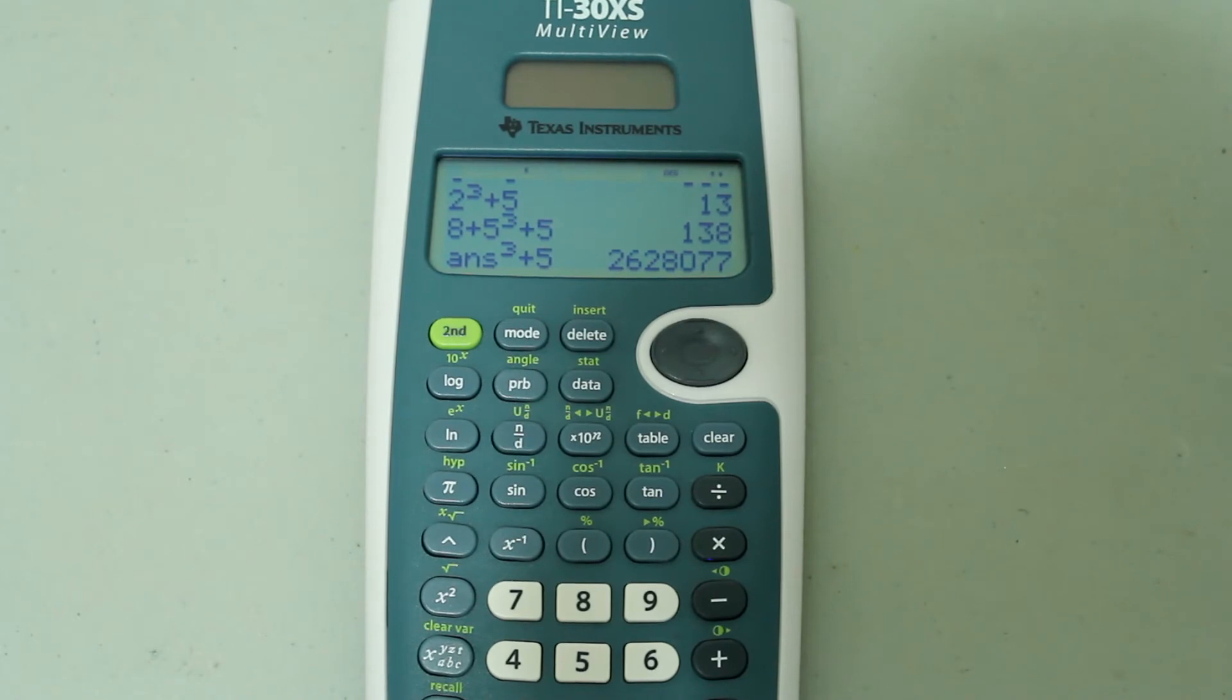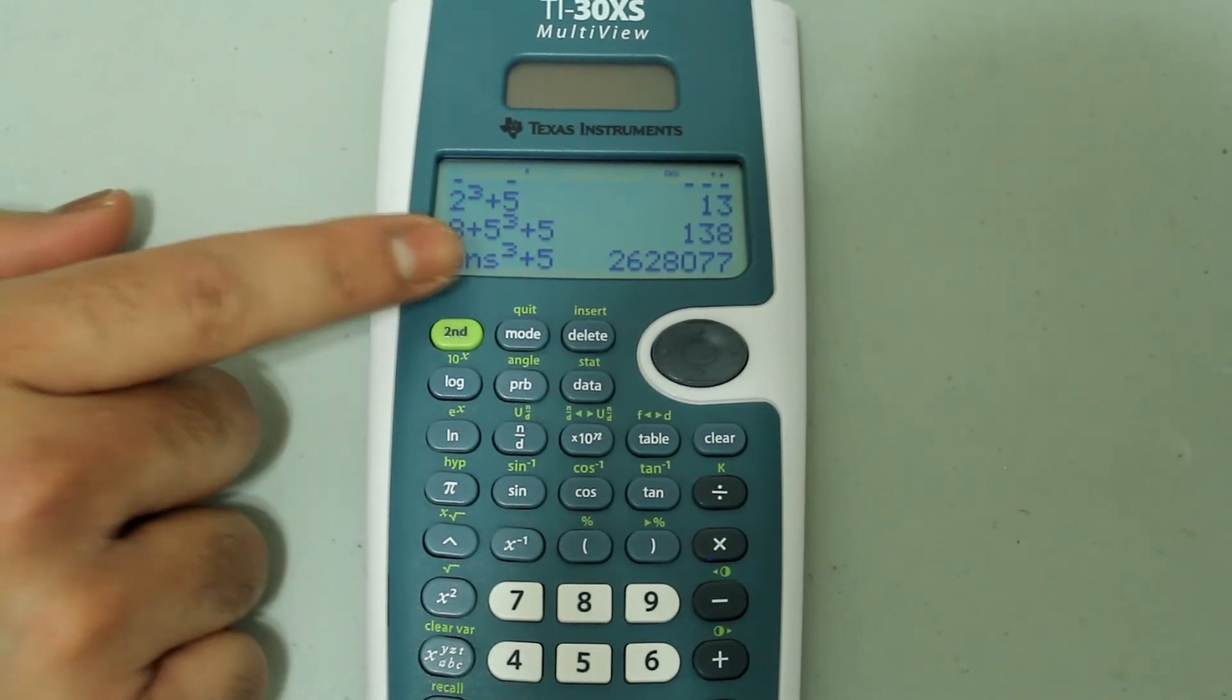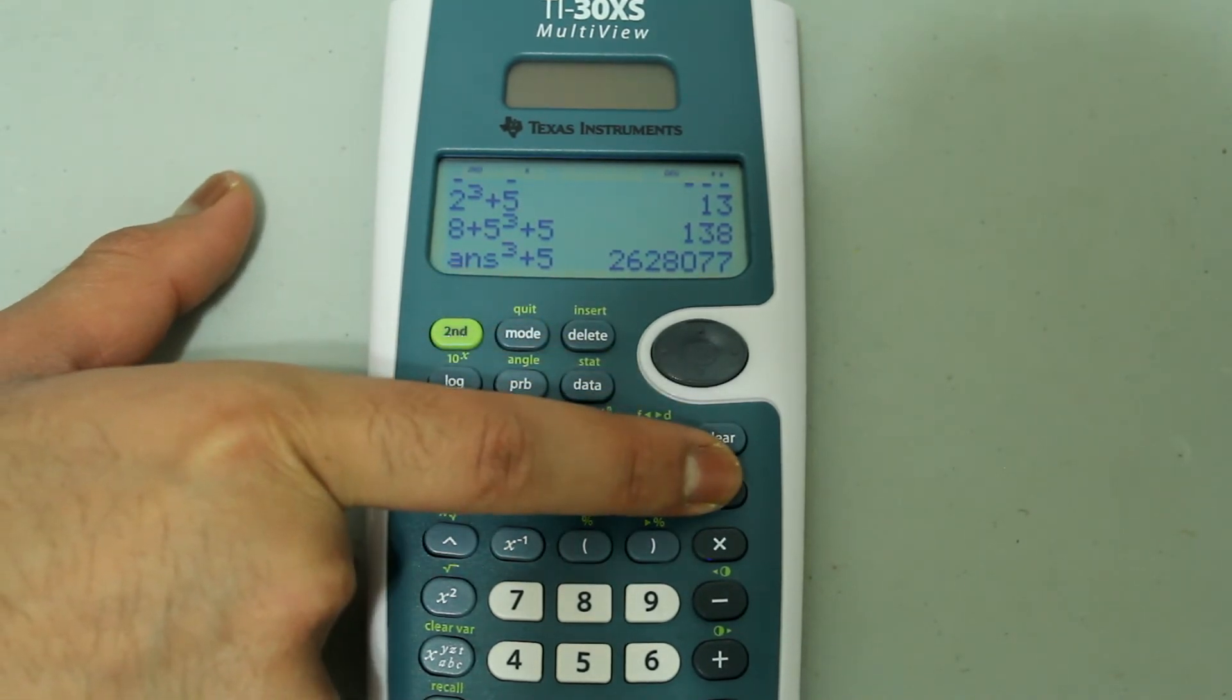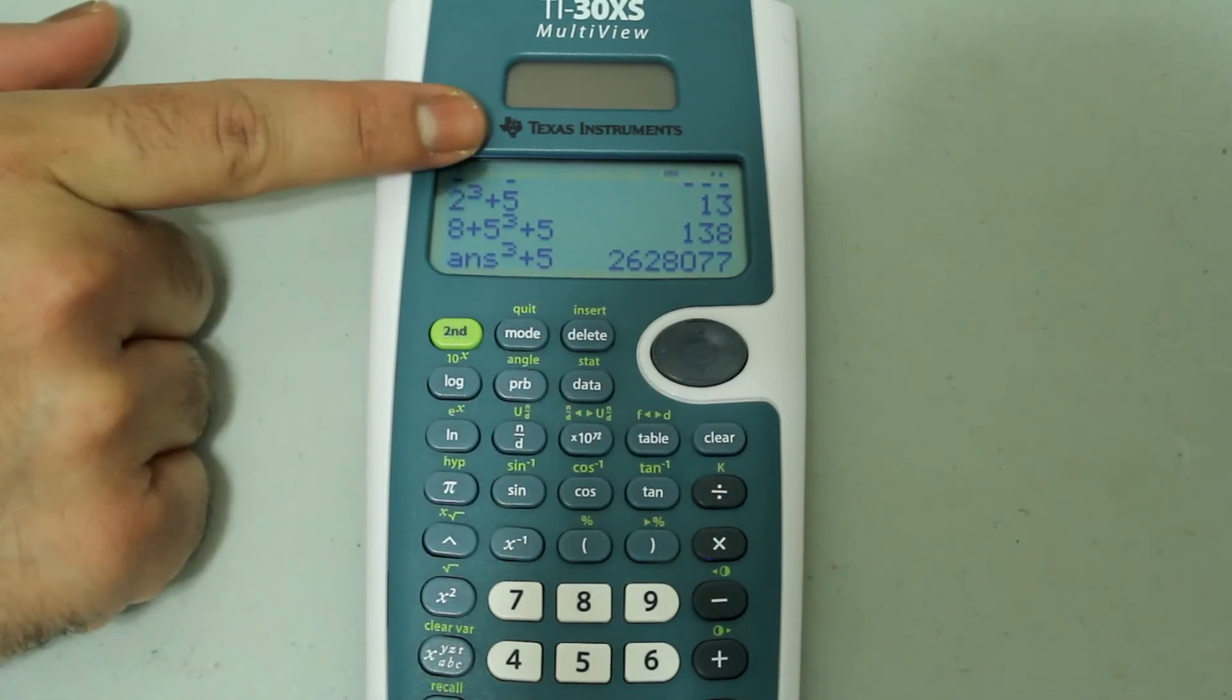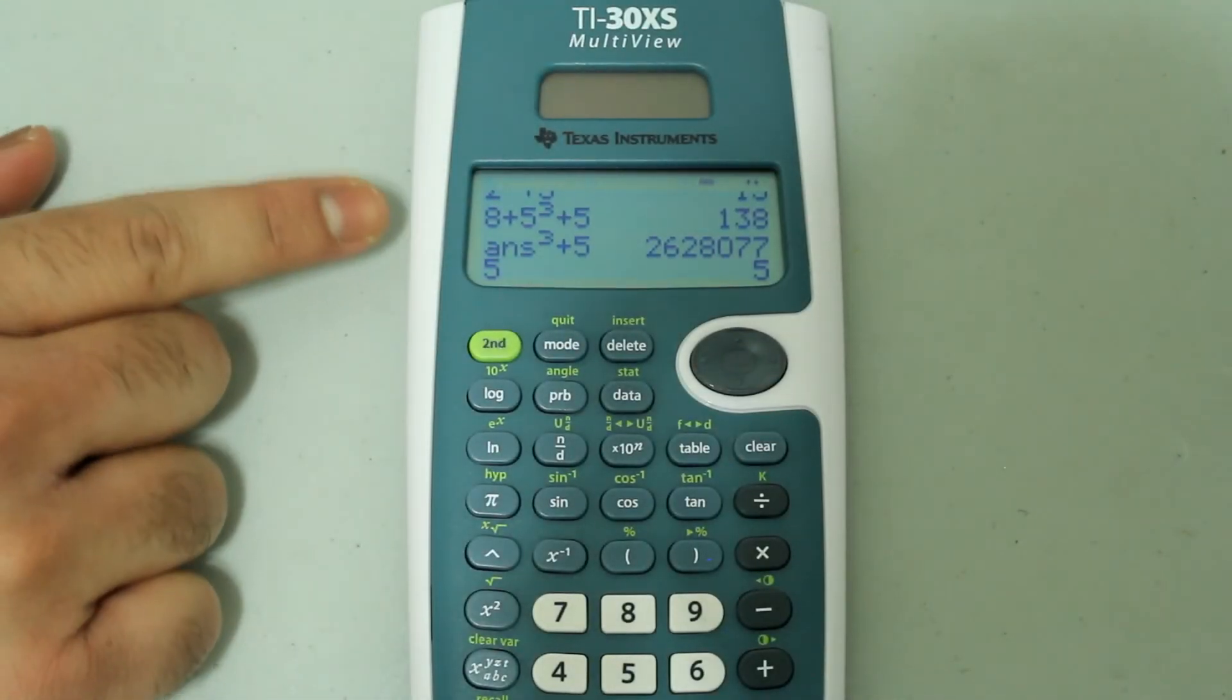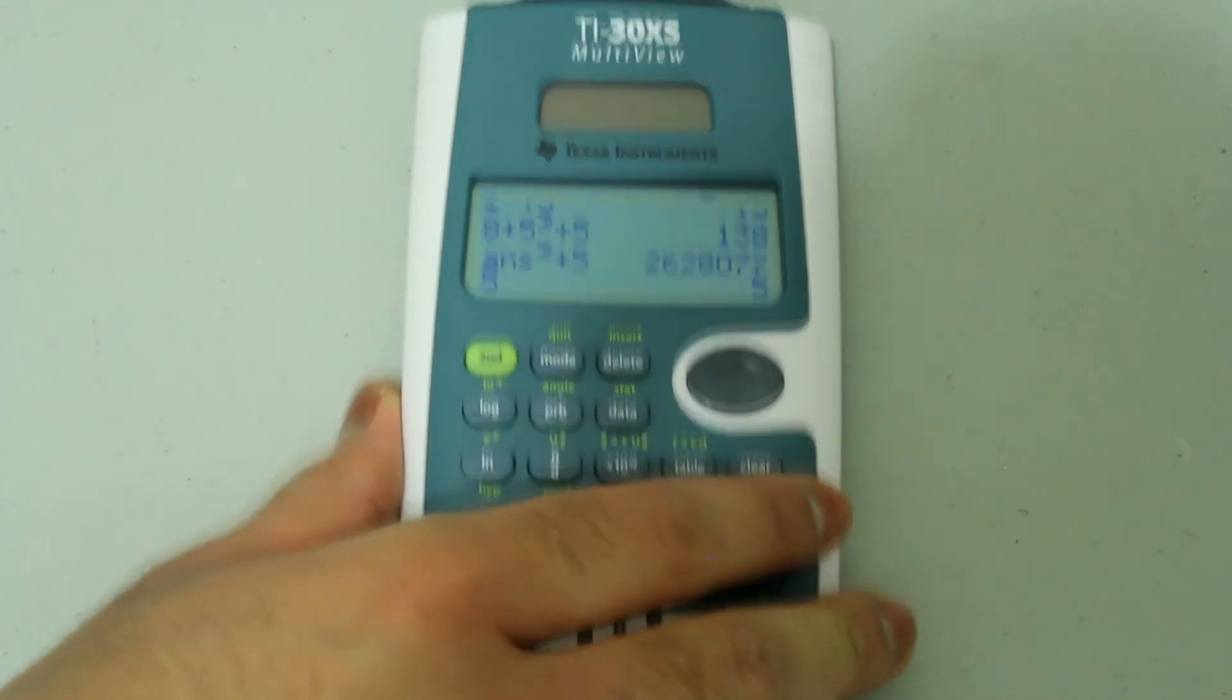Now if you want to deactivate the K operation, what you have to do is press second again and press the division sign and now the K goes away. So now if I do 5, enter, the operation is no longer being applied to the entries.